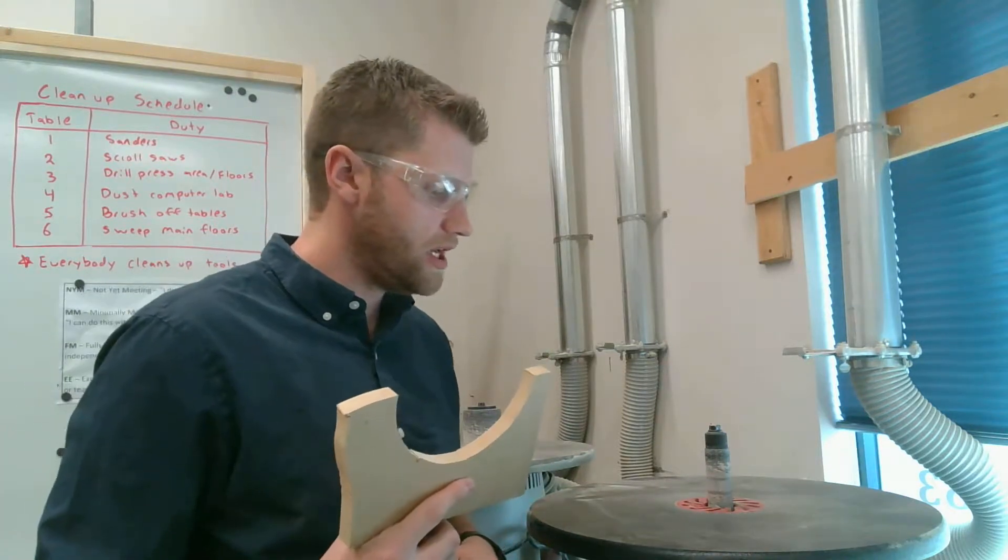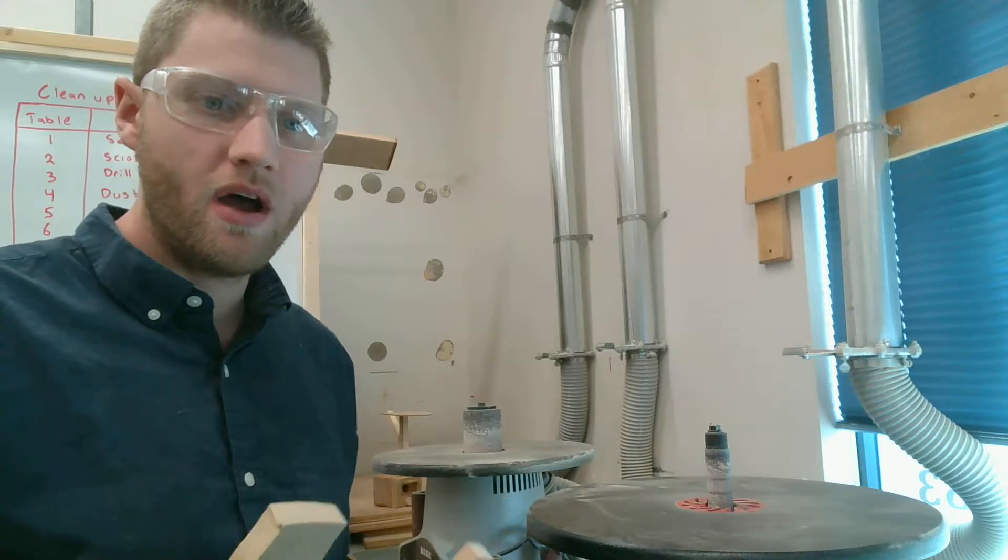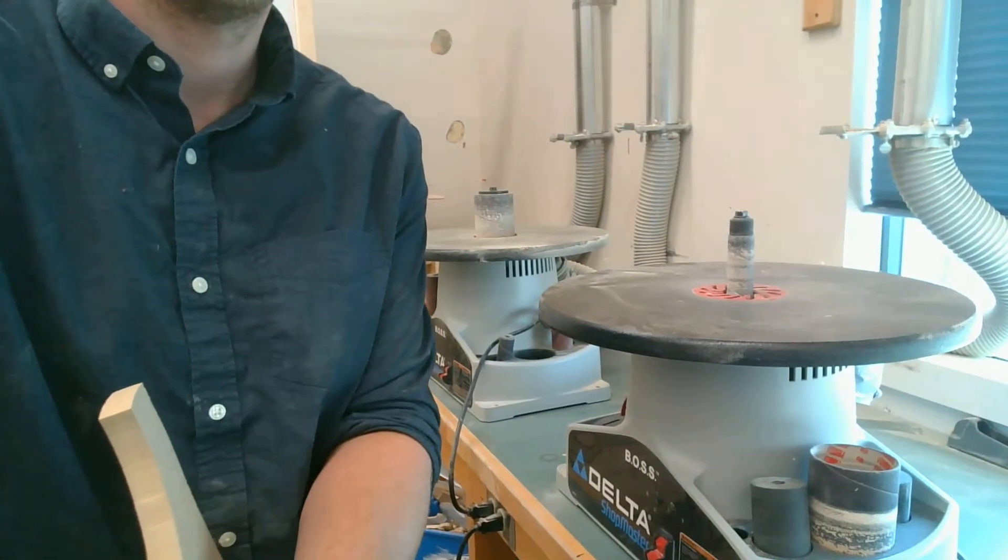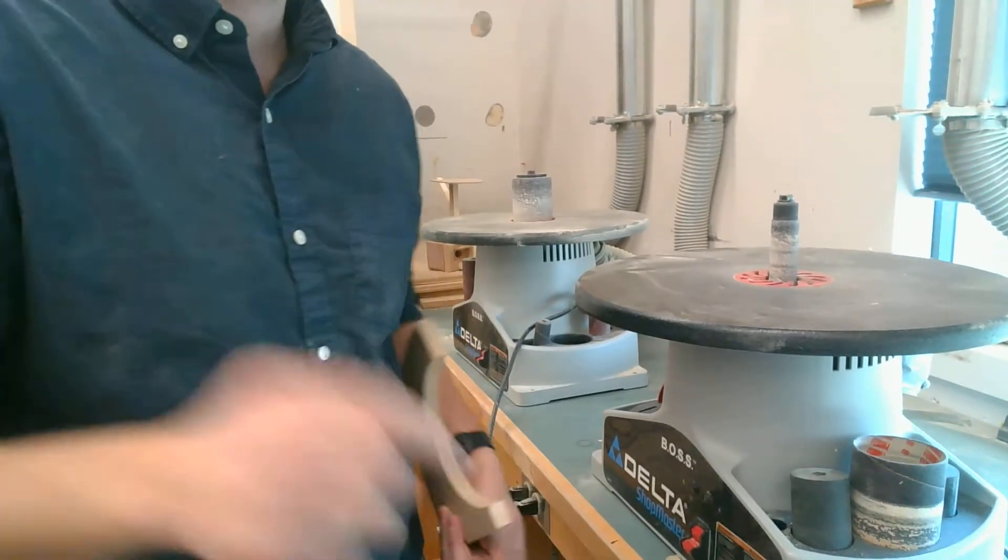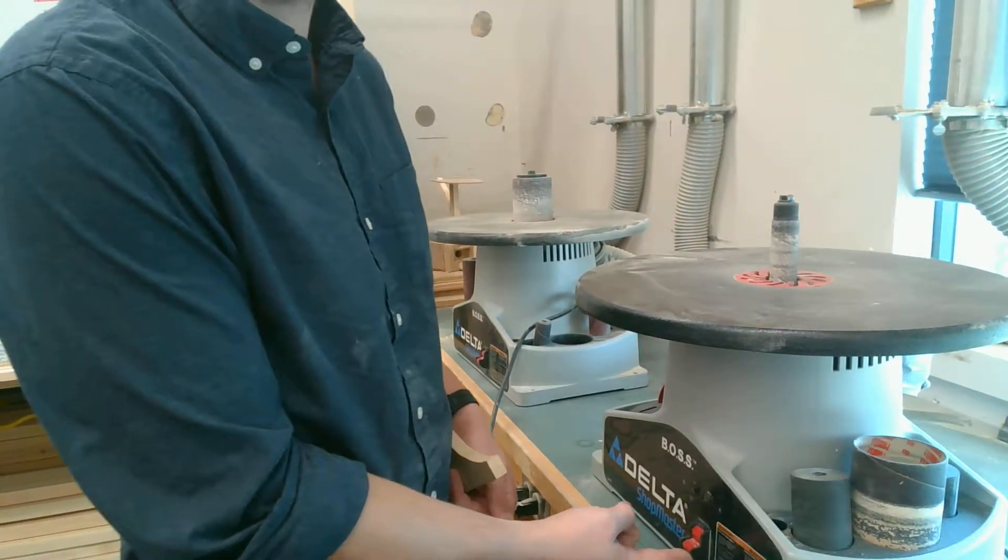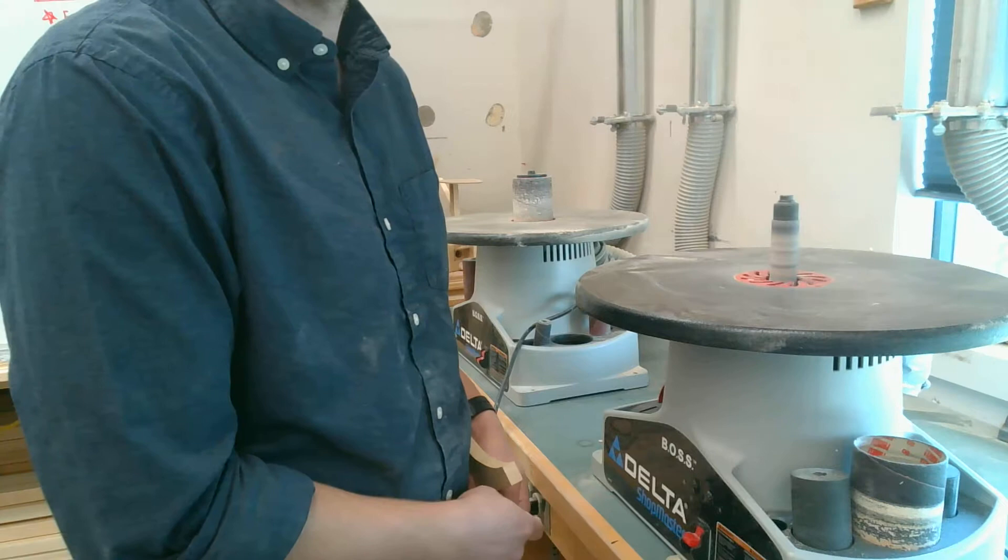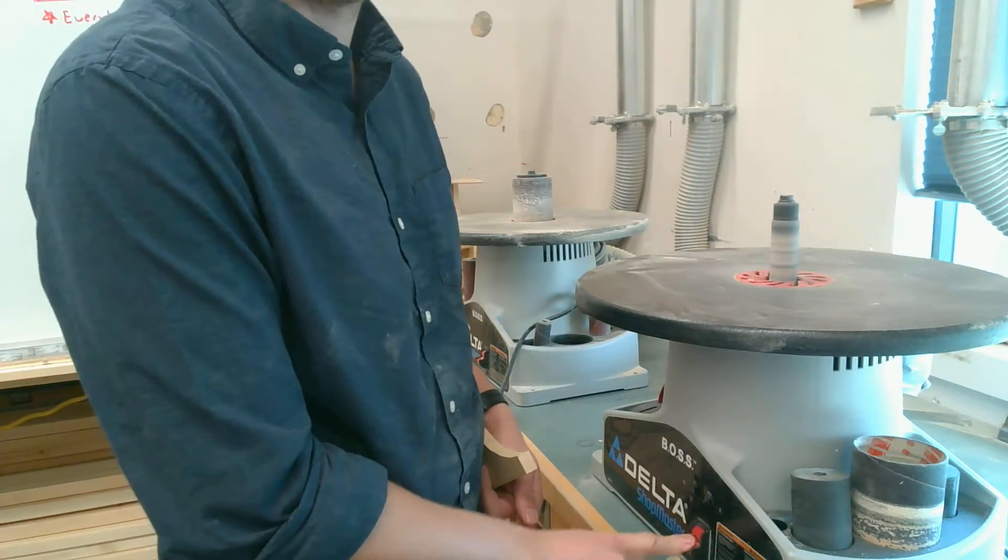Now with this machine we have an on-off switch at the bottom of our spindle sander which you can see down below. So to turn it on I can flick it up and then to turn it off I can flick it down.